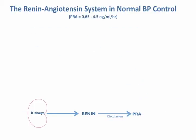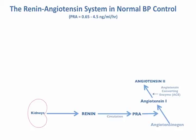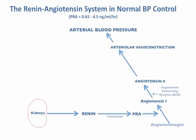Renin is normally secreted from the kidneys at such a rate that it sustains a normal level of blood pressure. Plasma renin maintains blood pressure by cleaving angiotensin-1 from plasma angiotensinogen. Angiotensin-1 is inactive, but it is quickly converted to angiotensin-2 by converting enzyme, a widely distributed enzyme. Angiotensin-2 quickly raises blood pressure by constricting the arterioles.